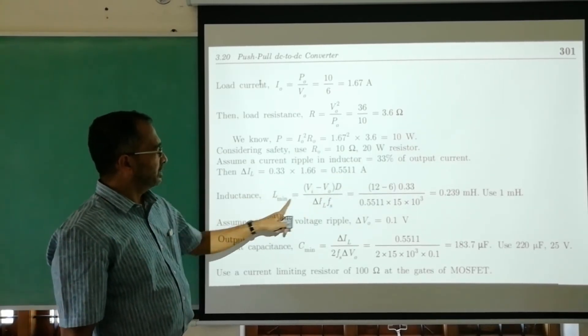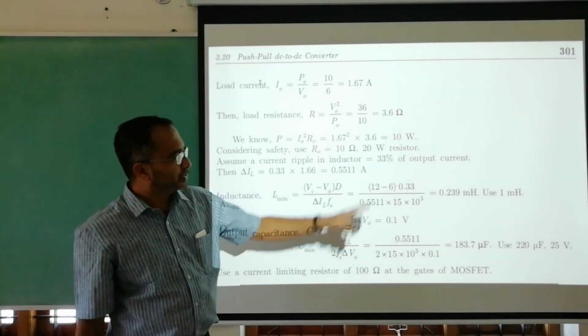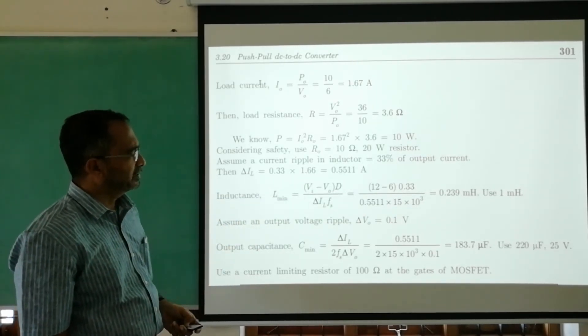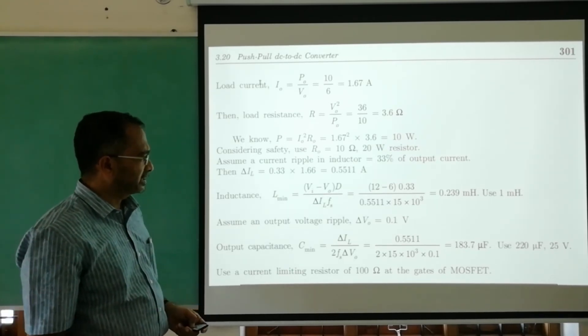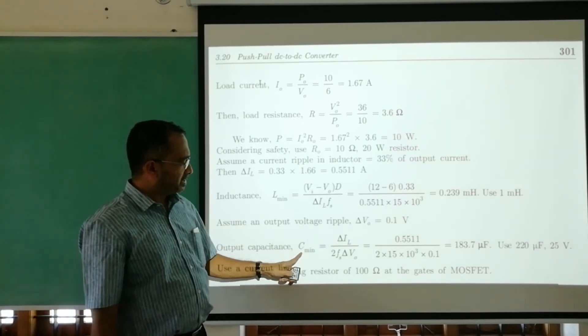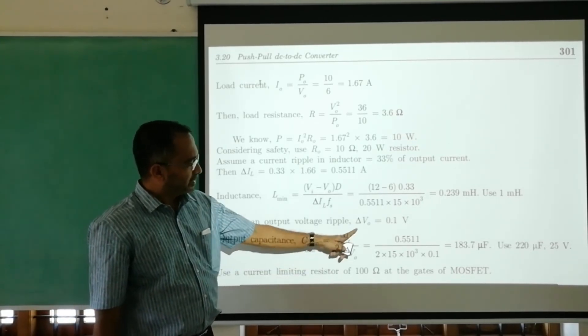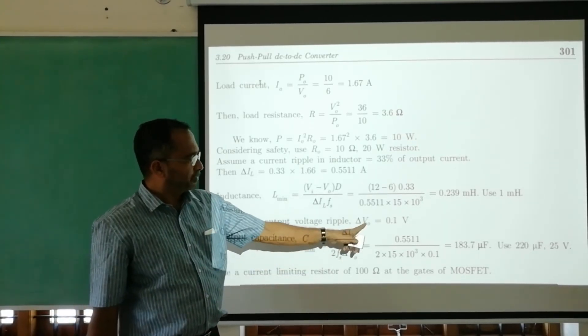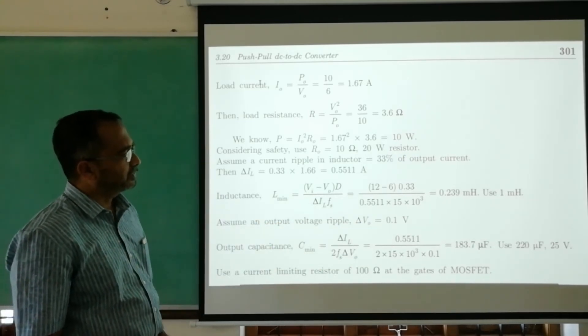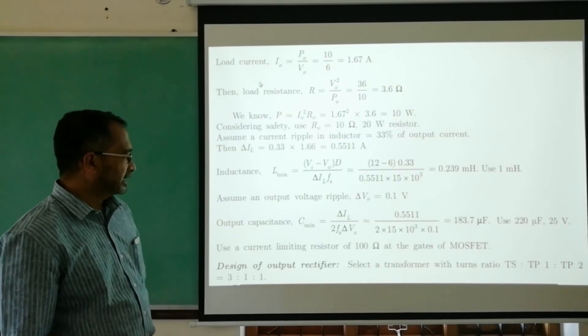Putting this in the equation for minimum value of inductors, we get 0.239 millihenry. We take 1 millihenry, accommodating some losses which may occur. For minimum capacitor value, we assume a ripple of 0.1 volts. Putting in there we get a capacitor value of 220 microfarad.